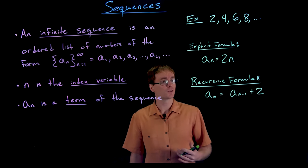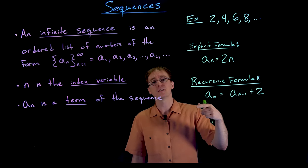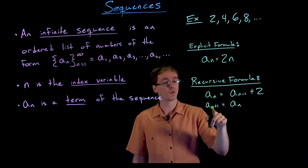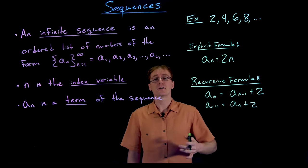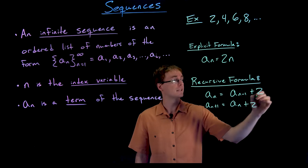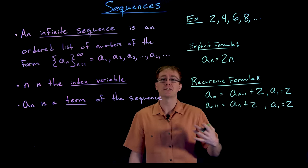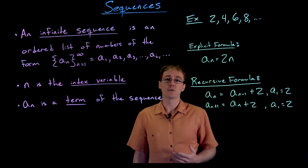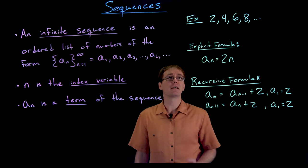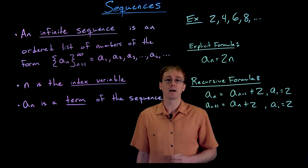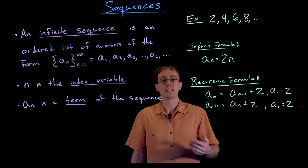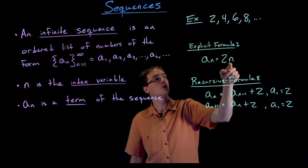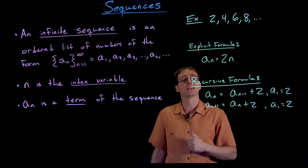Alternatively, you might see this written as a sub n plus one equals a sub n plus two, where the next term equals the current term plus two. Another common requirement with recursive formulas is a base case or starting point. Here our starting point, a sub one, equals two. Sometimes we only use two or three numbers to find an explicit or recursive formula, but we should always double-check by plugging in different n values. Plugging in n equals one through four gives us 2, 4, 6, 8, confirming the explicit formula works.